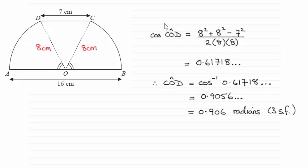And then it's minus the opposite side squared. So in this case, it's seven squared. And then it's all divided by twice the product of the two sides, that surround the angle here. So it's going to be two times eight times eight.